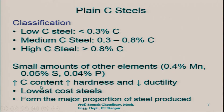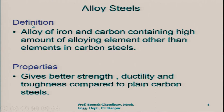The lowest cost steels are the plain carbon steels. Amongst all other steels, plain carbon steels are of the lowest cost and form the major proportion of steel produced — this is cheaper and easier to form, easier to manufacture. Therefore plain carbon steels form the major proportion of steel produced in the metallurgy industry. Alloy steels by definition are alloys of iron and carbon containing a high amount of alloying elements other than those found in carbon steel.